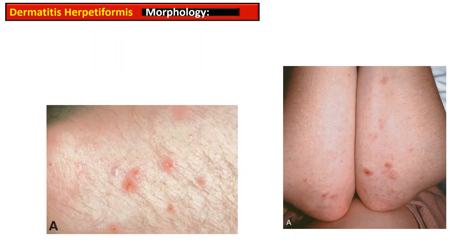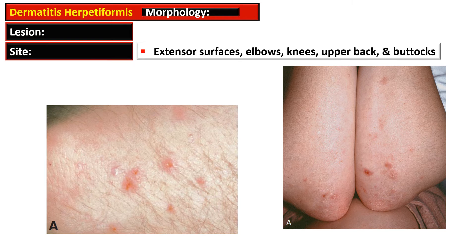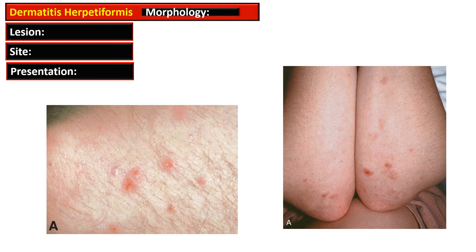The lesions of dermatitis herpetiformis are bilateral, symmetric, and grouped, and these are erythematous blisters. The sites of these lesions are extensor surfaces — elbow, knees, upper back, and buttocks. They present with crusted lesions and no intact vesicles usually, because they are intensely pruritic.